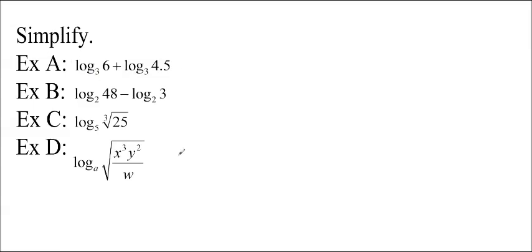Here we go. So if you want to pause the video and do these on your own, you can. But I will go ahead and do them with you. Log base 3 of 6 plus log base 3 of 4.5. So because there's a plus, we know that this is going to be the product law. Log base 3 of 6 times 4.5. Again, I'm putting brackets around my argument. So this becomes log base 3 of 27. And if you know your powers of 3, then you know this is 3 cubed. So we can just write 3.